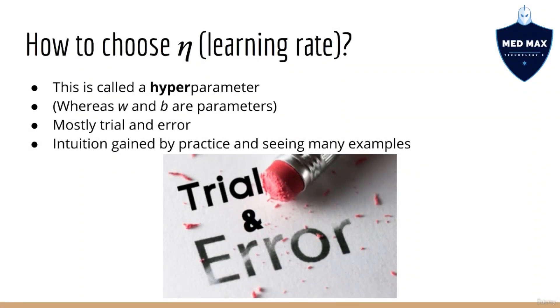Unfortunately, there's no direct method of choosing a good learning rate. Generally speaking, the learning rate is something we call a hyperparameter. This is to differentiate it from w and b, which are just regular old parameters. It's called a hyperparameter because it's still a parameter, but it's not a parameter of the model itself. It's sort of like a meta parameter, and in fact, no hyperparameters are really chosen directly. It's more of a process of trial and error, along with intuition that you gain from practicing a lot and seeing a lot of different examples.